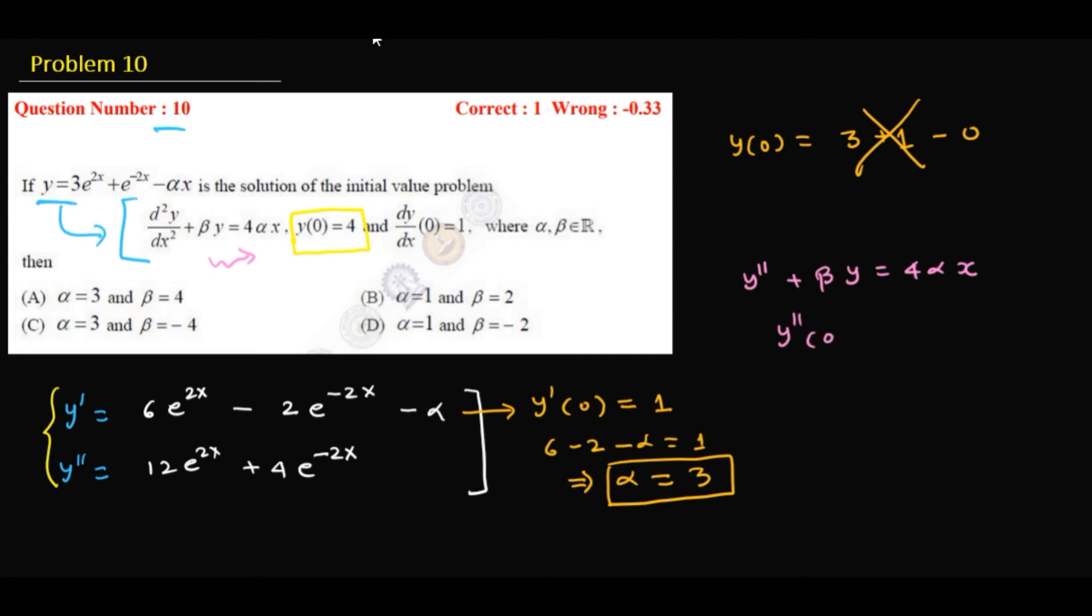Y double prime is 0. If you substitute 0 plus beta times y(0), it goes to zero. So from this I can find out y double prime. So y''(0) is what?